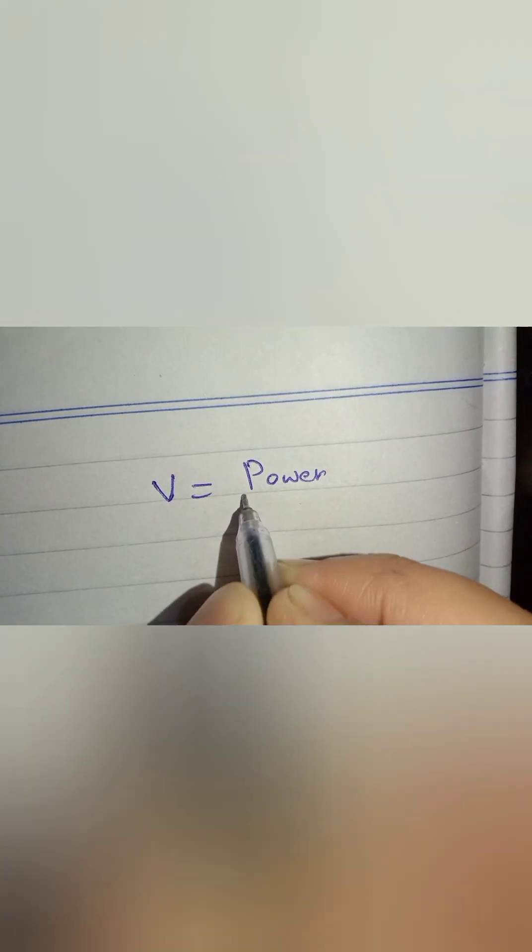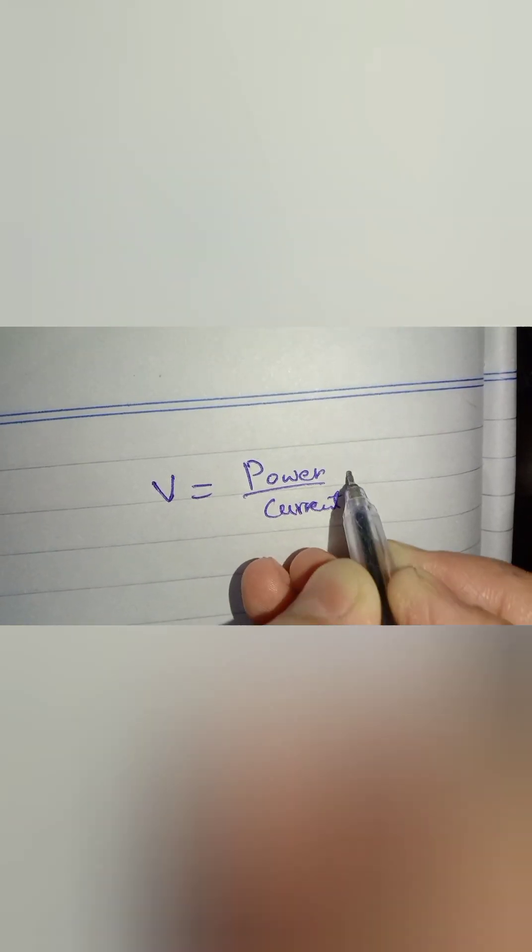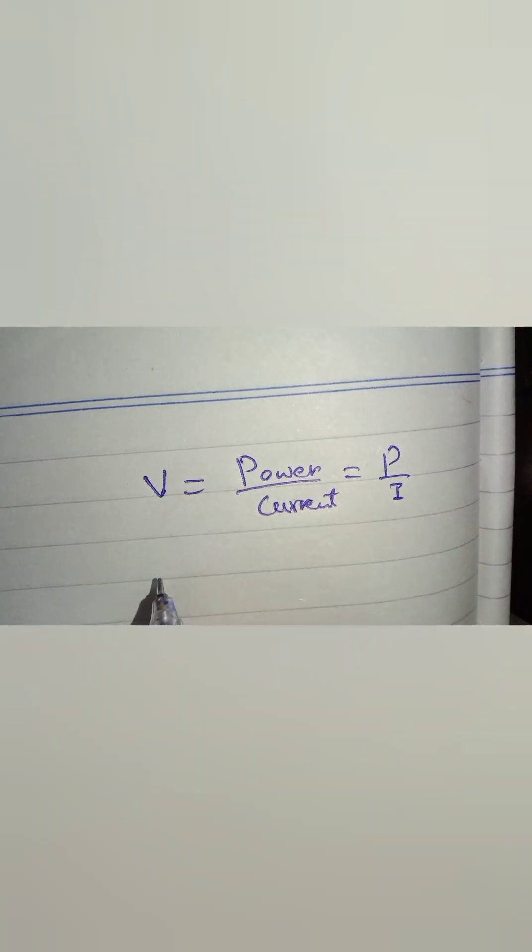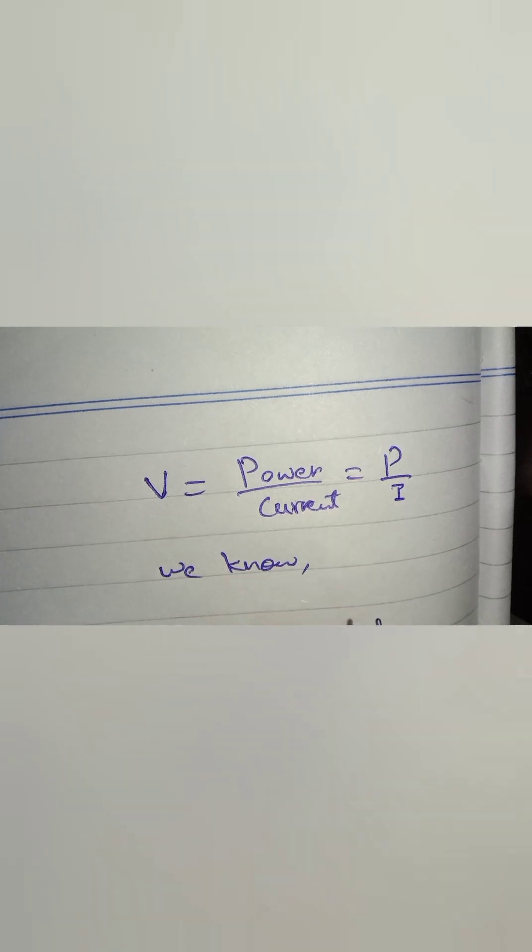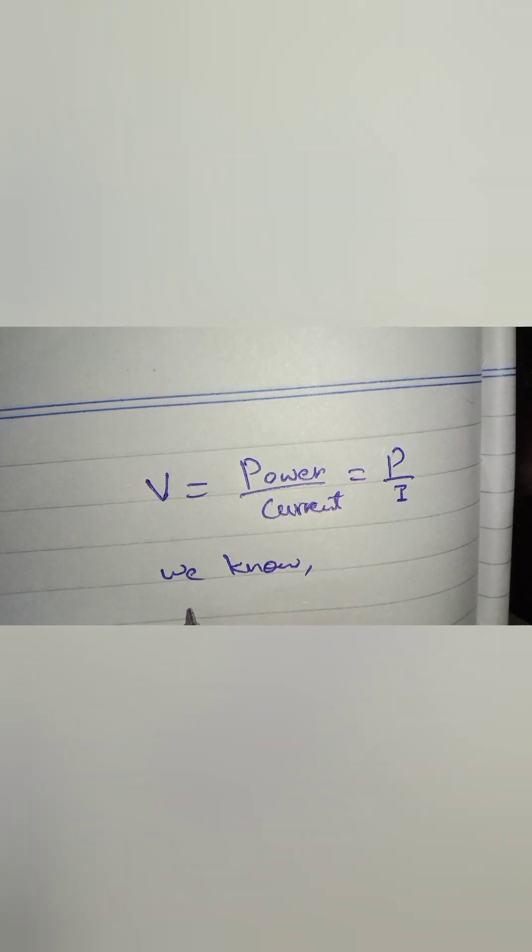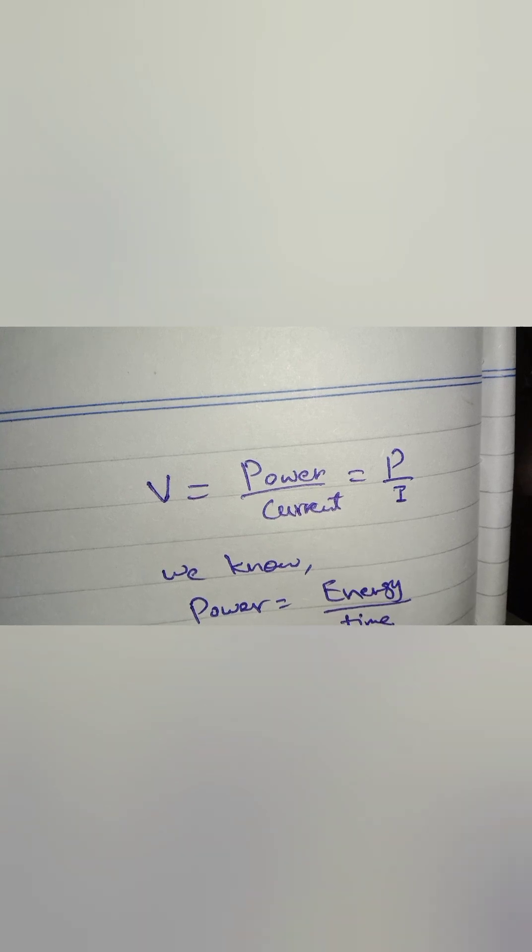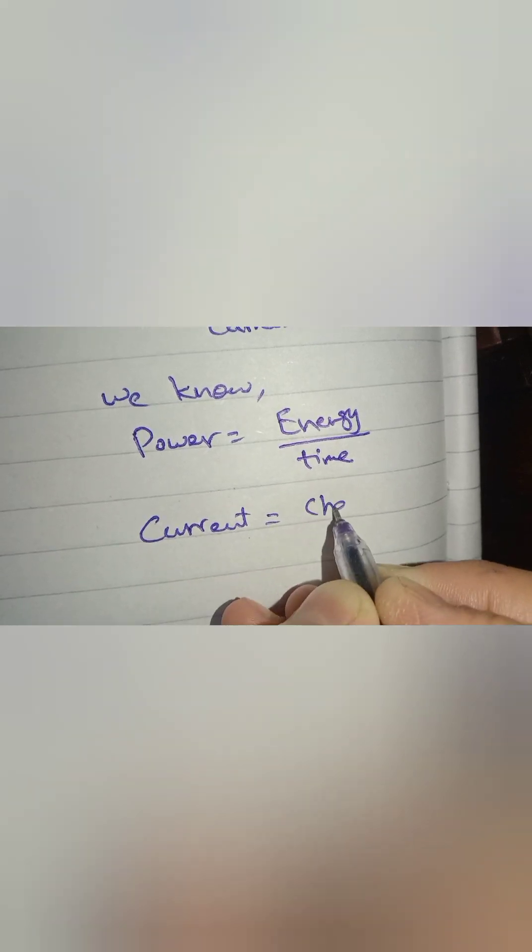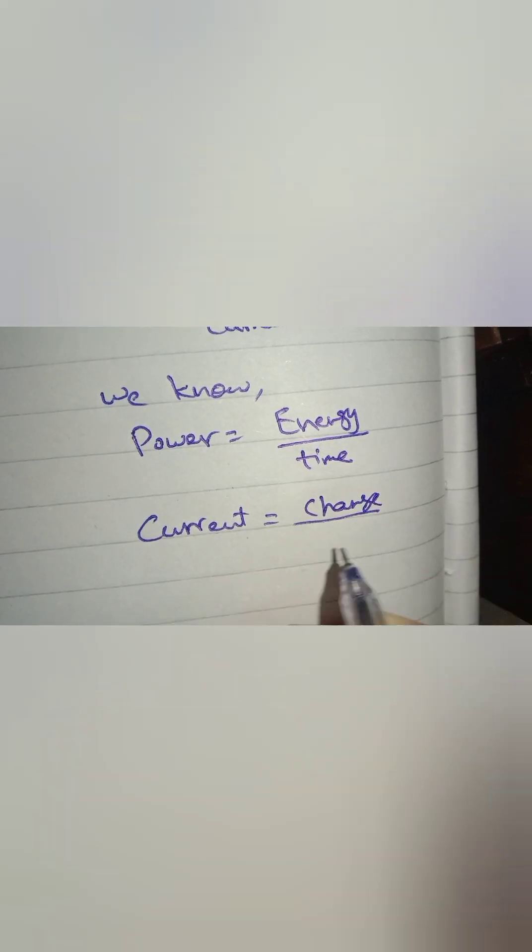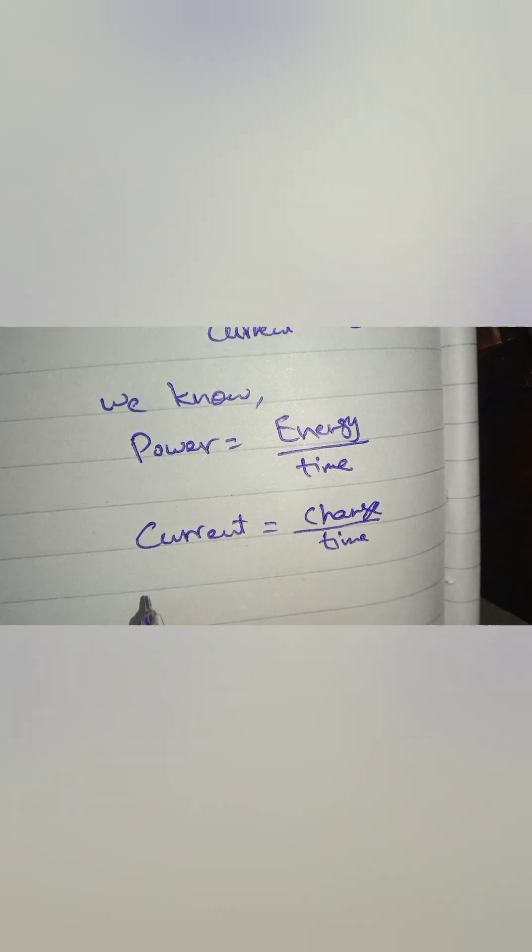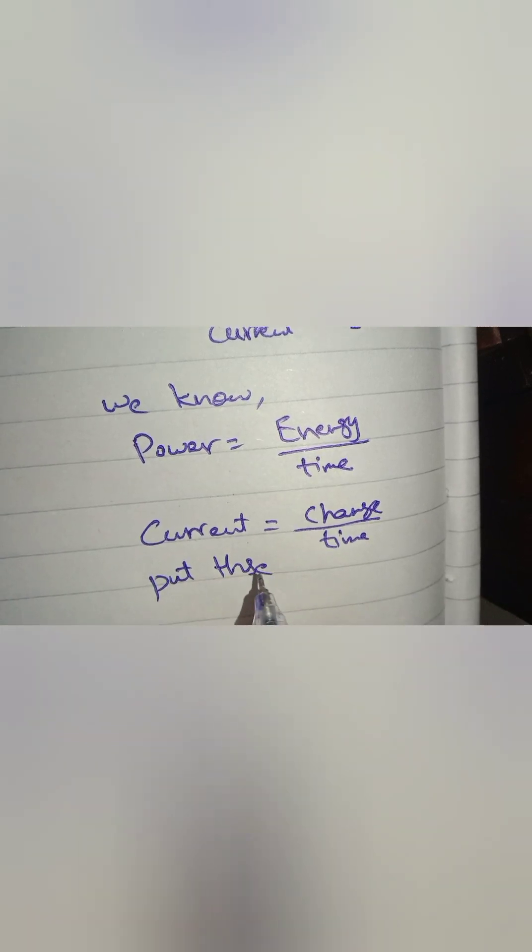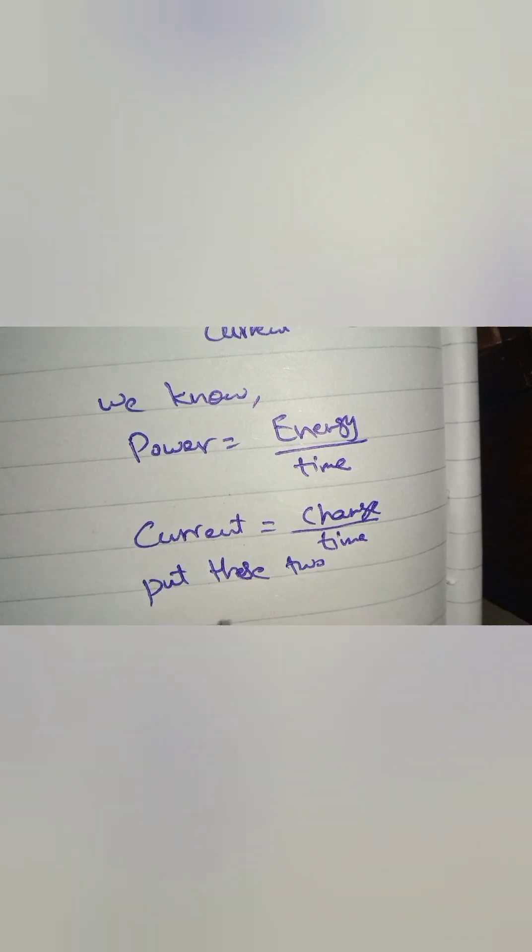From Ohm's law we know that voltage equals power divided by current. Power is written as P and current is written as I. We know that power is equal to energy per unit time, and current is equal to the rate of change of charge, that is the charge flow per unit time. So what we are going to do is put these two values in our voltage equation.